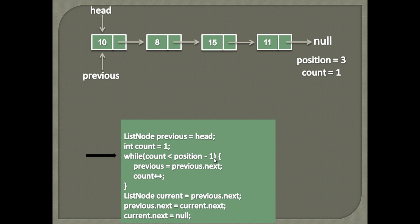The condition used is: count should be less than position minus 1. Currently, the value of count is 1 and the value of position is 3. Thus, count value is less than position minus 1, that is 2. Thus, the statement in the while loop executes. In the while loop we just traverse the previous node by one node.